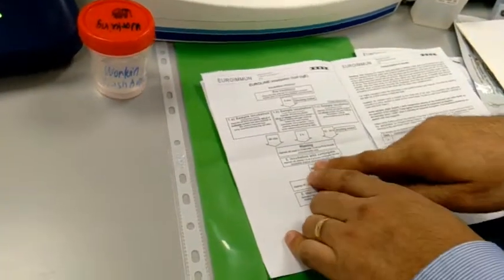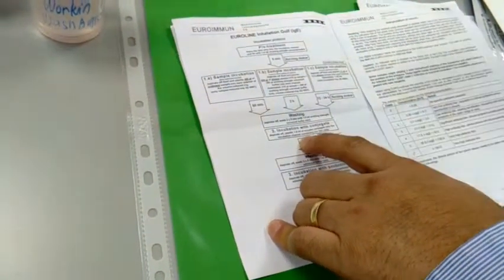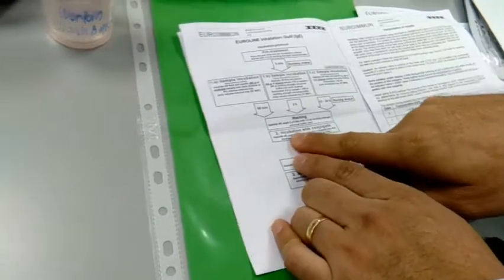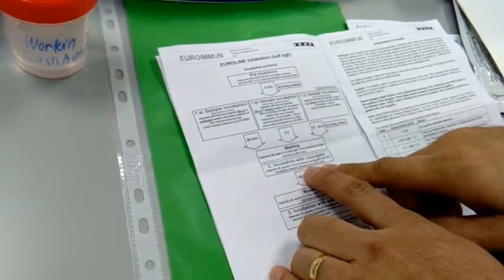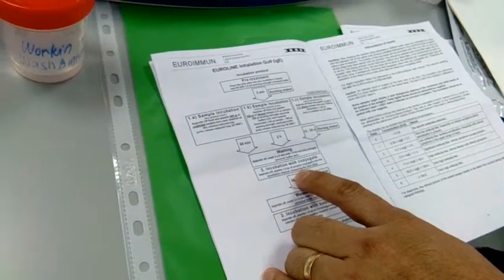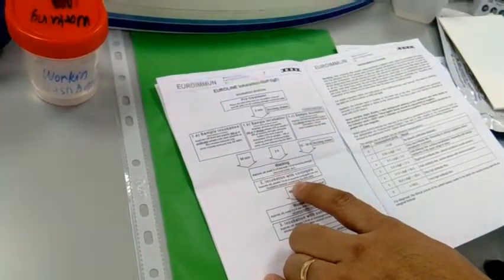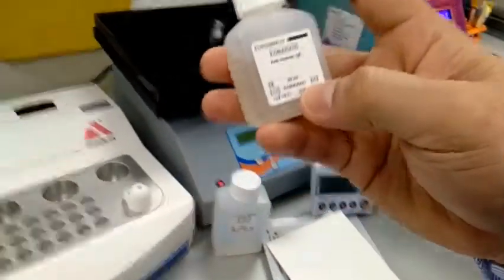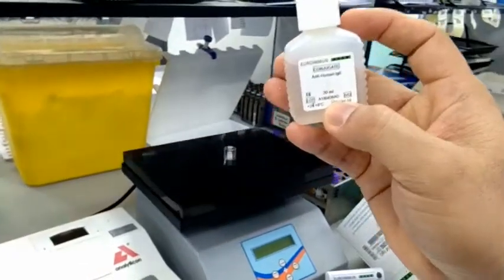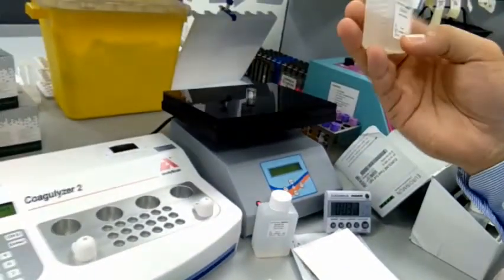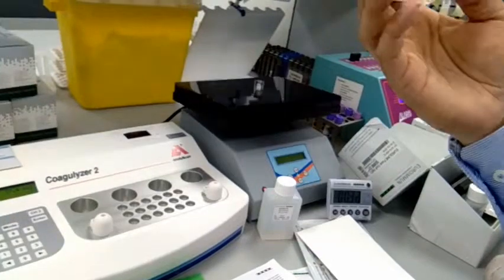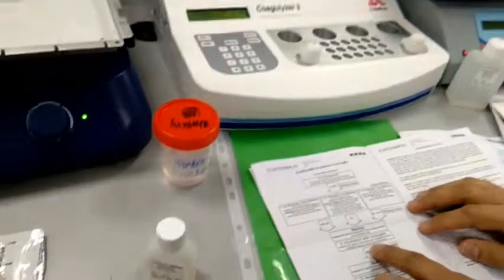And then again incubate with the conjugate. So we have to pipette it, 1ml of the enzyme conjugate. So this is the conjugate, this is 20 ml. Anyway, you have only 16 strips, so you have at least 4 ml left.